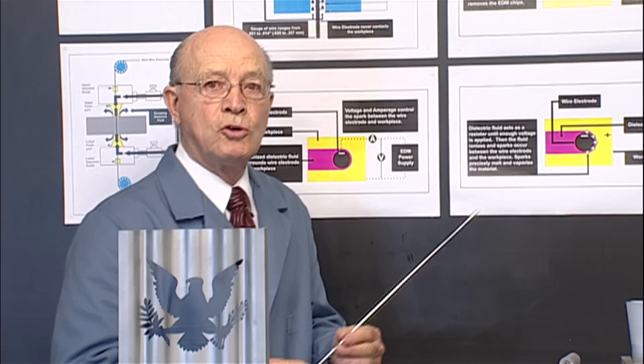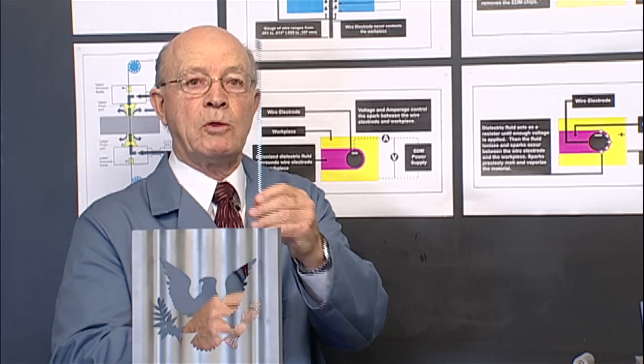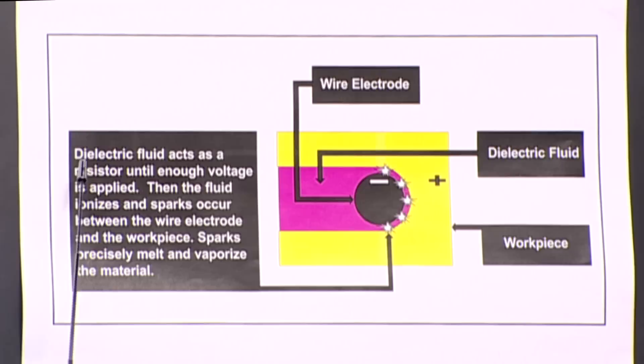So the secret of this wire EDM machine is a servo mechanism that always maintains a gap between the workpiece and the wire electrode. So whether we're cutting straight or up to 45 degrees taper, there is always this gap that is present. The dielectric fluid acts as a resistor until enough voltage is applied.